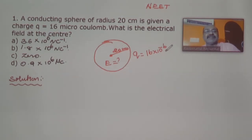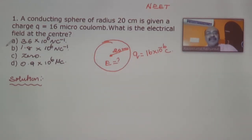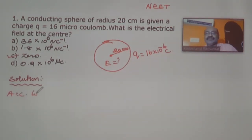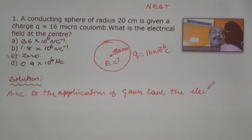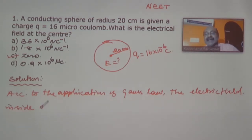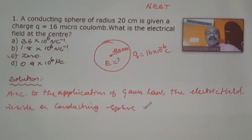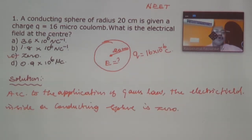According to the application of the Gaussian surface, we have studied that the electrical field inside a hollow sphere is equal to zero. So the answer is option C. According to Gauss's law, the electric field inside a conducting sphere is zero. So we have got option C as the answer.